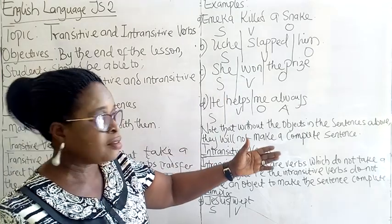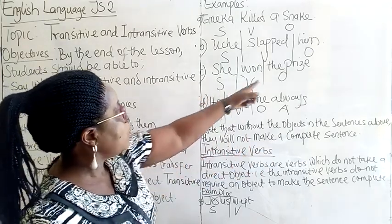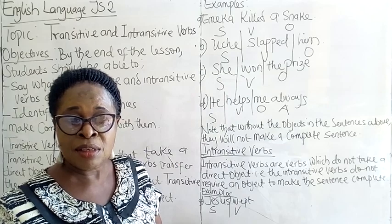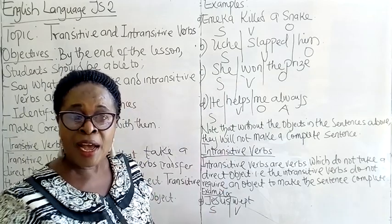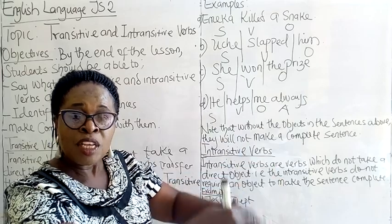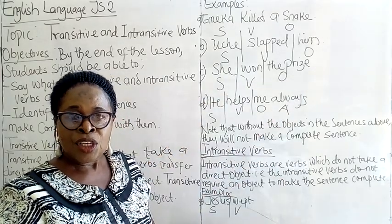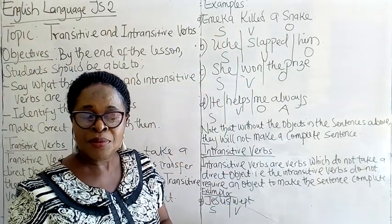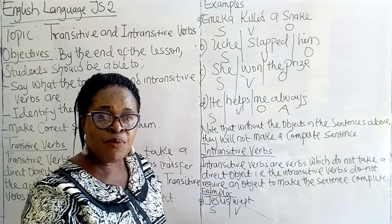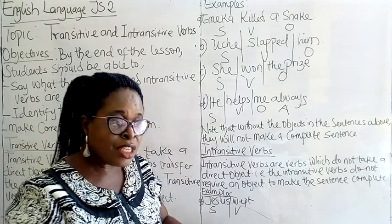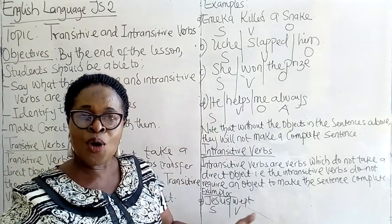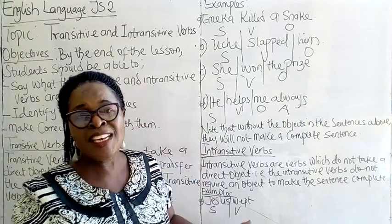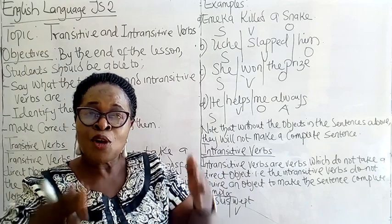She won the prize — she is the one that won the prize, so the prize is the object while she is the subject. My father bought a car. She climbed the tree. The teacher gave me three naira. So, once the action of the subject is received by the object, you say that the sentence is in the transitive form.